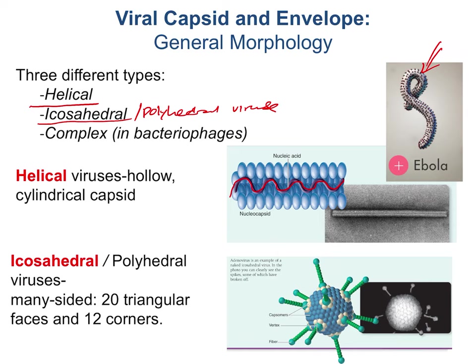The spikes are carbohydrate-protein complexes — glycoproteins — projecting from the surface of the envelope. Some viruses attach to host cells by means of these spikes. We can also use spikes as a characteristic to identify certain viruses. For example, influenza viruses use spikes to cause hemagglutination — the clumping of red blood cells — and this can be used in identifying the influenza A virus.